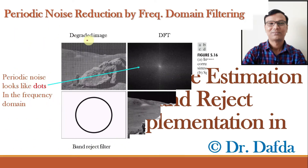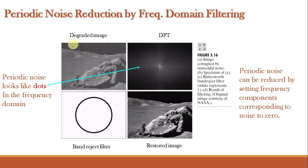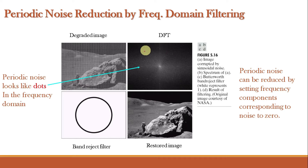Starting with the slide from the previous video class: we saw a degraded image corrupted by periodic noise — you can see the continuous repeating patterns on the image. When we take the discrete Fourier transform of this degraded image, the periodic noise appears as dots arranged in a circular fashion in the frequency domain. We can use a band reject filter to reject this particular circular band, thereby rejecting the noise, and our restored image after filtering will look like this.